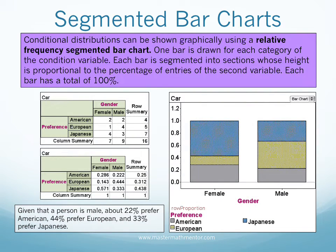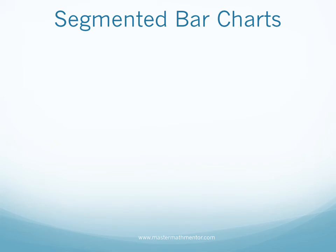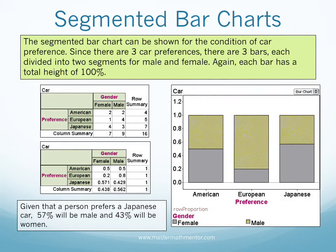The conditional percentage distribution can be viewed as a graph called a relative frequency segmented bar chart. One bar is drawn for each category of the condition variable. In this case, the condition variable is gender, so there are two bars. We then divide each bar into three segments for the car preference based on the gender. Each segment is proportional to the percentage of entries of car preference. Each bar will have a total height of 100 percent. It is important that each segment is labeled with a different color or shading. The segmented bar chart is also viewed in terms of the condition of car preference — since there are three car preferences, there are three bars, each divided into two segments for male and female, with the height of each bar again at 100 percent.